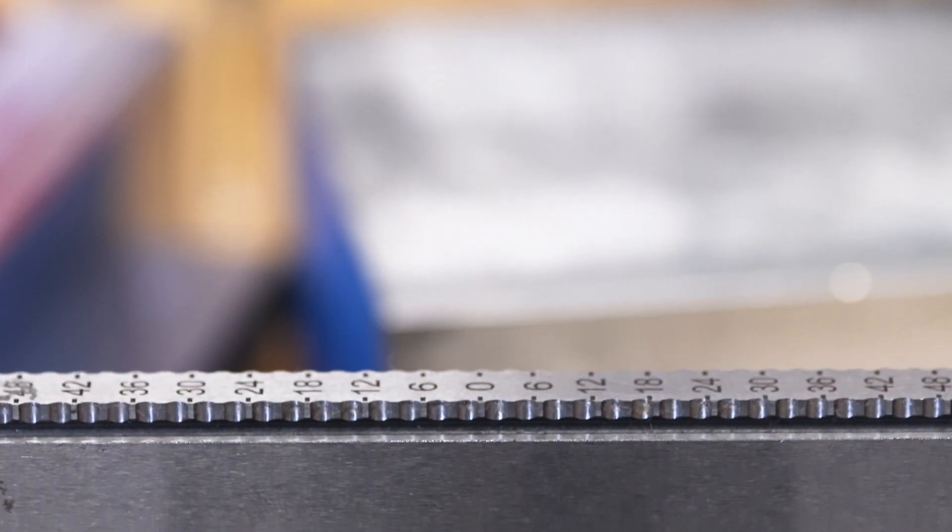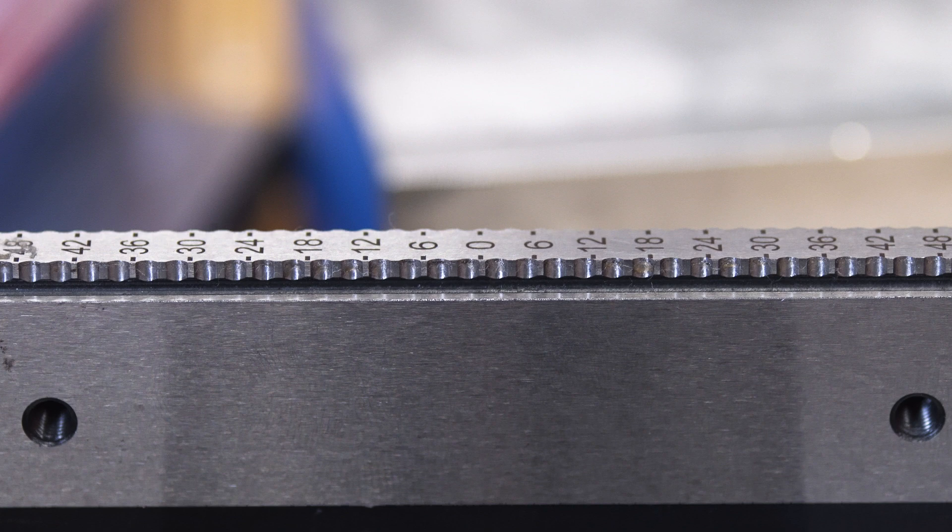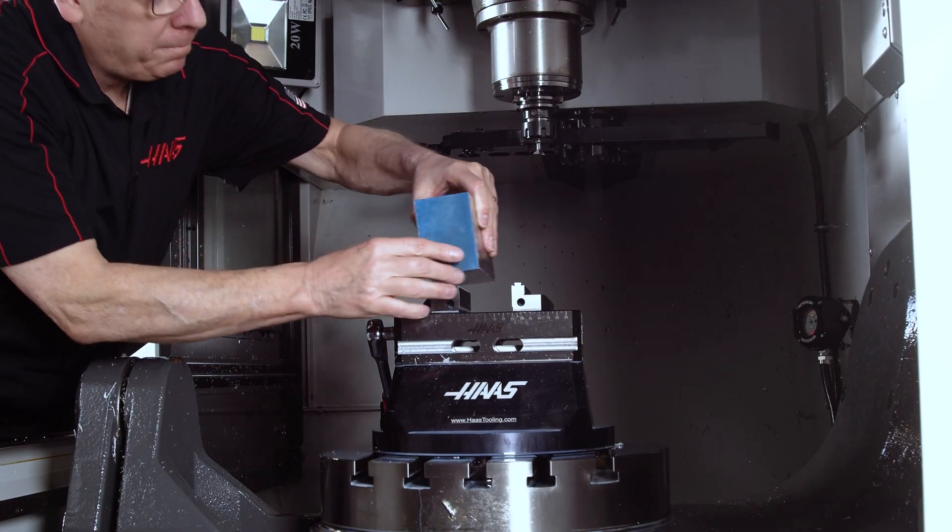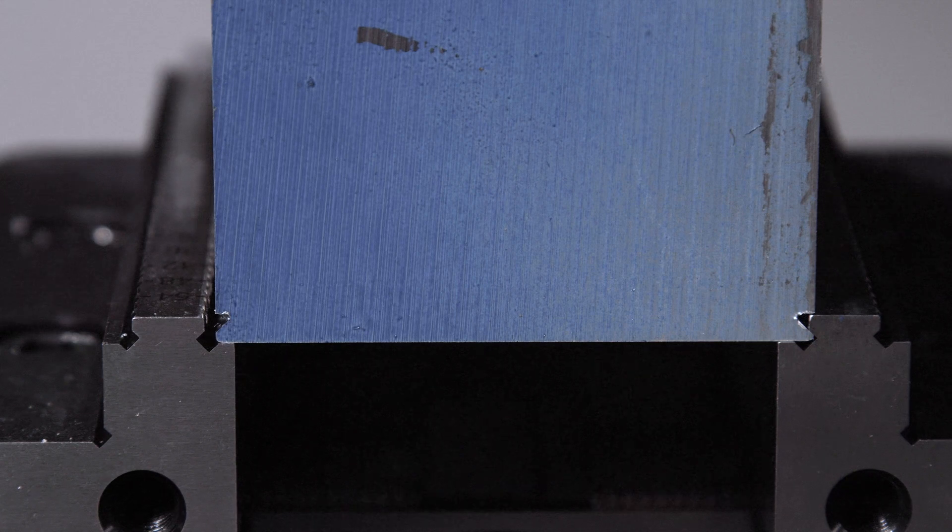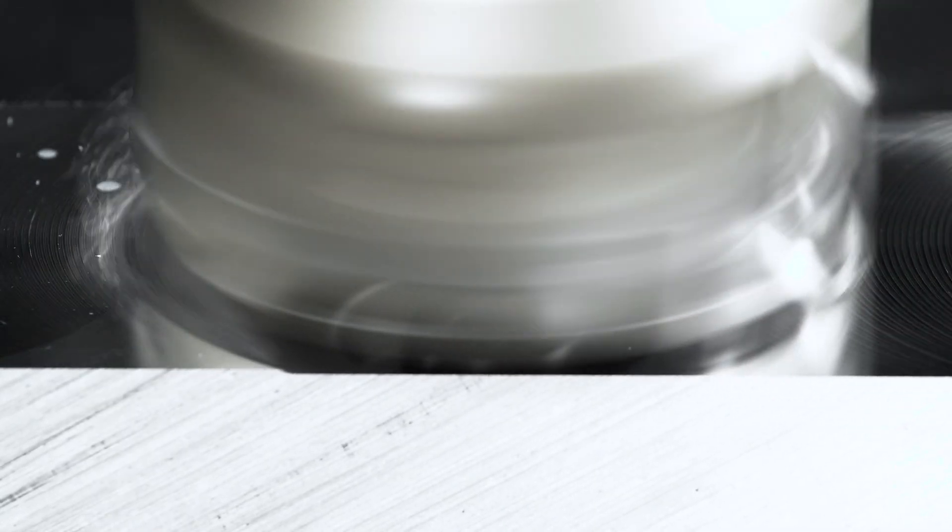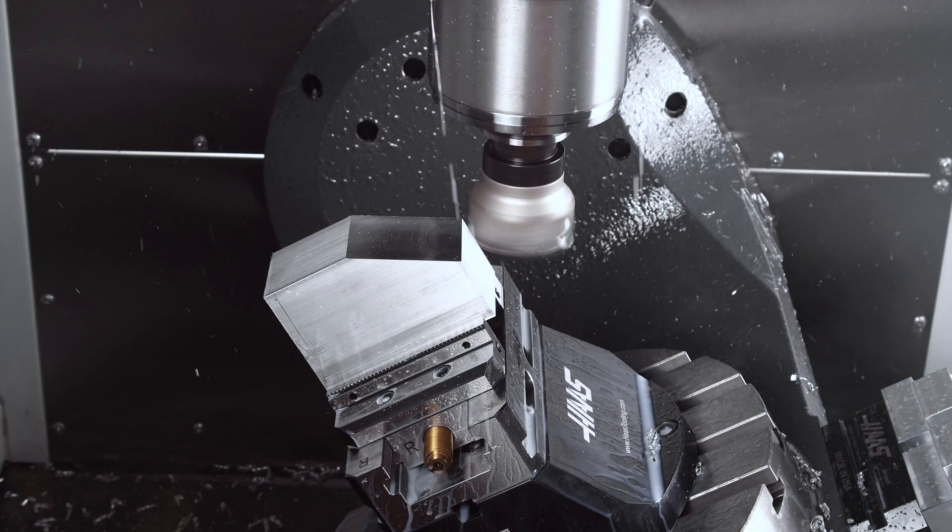These serrated style jaws that come stock on our self-centering vises, while they don't have a true dovetail on them, have enough of a relief that you can definitely hold on to one and it for sure increases the rigidity of the setup. I've had parts move using just the serrations, but they get locked in after throwing a dovetail on them.